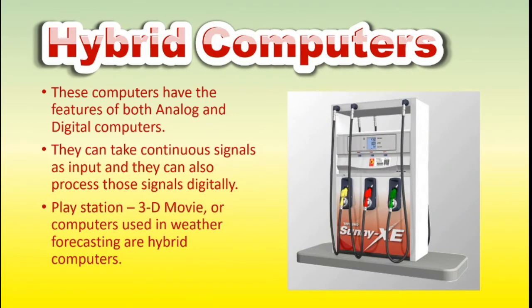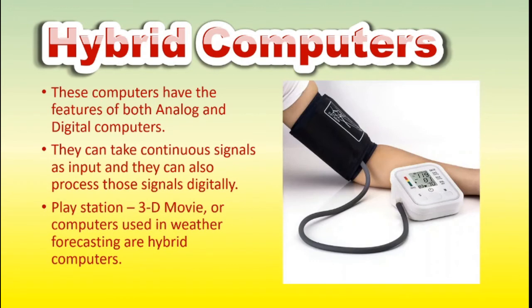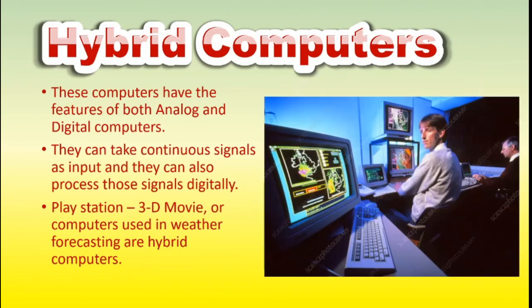For example, a petrol pump contains a processor that converts fuel flow measurements into quantity and price values. In a hospital intensive care unit, an analog device measures the patient's blood pressure, which is then converted and displayed in the form of digits. Hybrid computers are also used for scientific calculations in defense and radar systems. PlayStation, 3D movies, and computers used in weather forecasting are also hybrid computers.